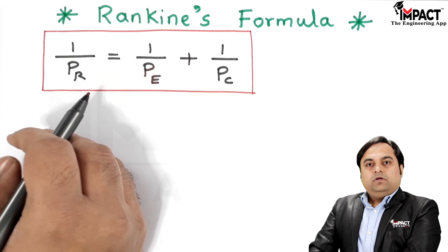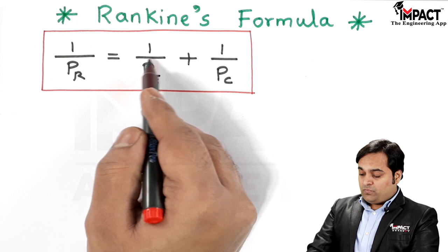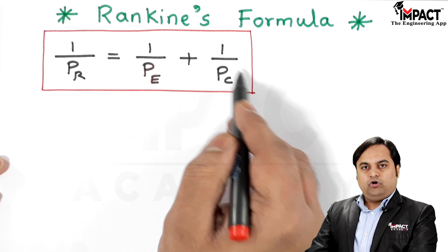The general formula states that the reciprocal of P_r (Rankine's crippling load) is equal to one upon P_e (Euler's crippling load) plus one upon P_c, where P_c is the compressive load, also called the crushing load.